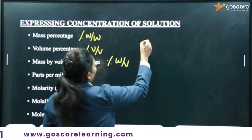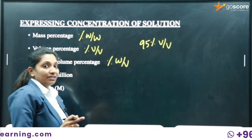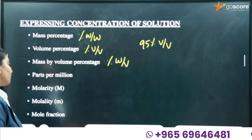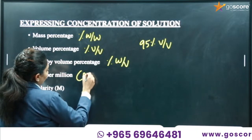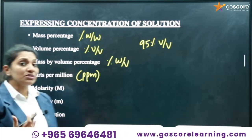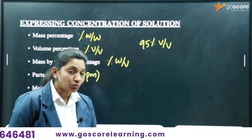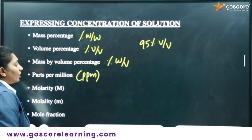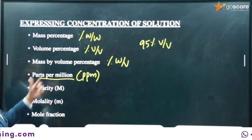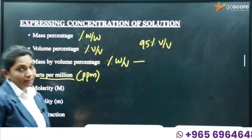If given a 95% volume by volume solution, that means it contains 95 ml of solute dissolved in 100 ml of solution. Then comes parts per million (ppm). We use parts per million to express the amount of impurities present in air or in water — very small amounts of substances. Mass by volume percentage is mainly used in medicinal preparations.